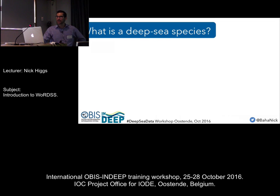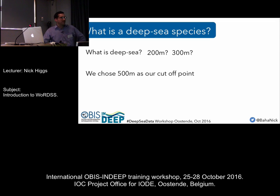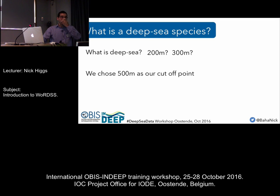Most of you here are obviously involved with working on deep sea species. The first question you have to define and be upfront about when trying to do this kind of thing is: what exactly is a deep sea species? The same old question — what is deep sea? Where do we define it: 200, 300 metres? We essentially started at 500 metres as our cut-off point, and I guess this was really more about quality control than anything else. It all comes down to quality of data, and that's why I wanted to highlight this as an example of where you really need to have quality data input.